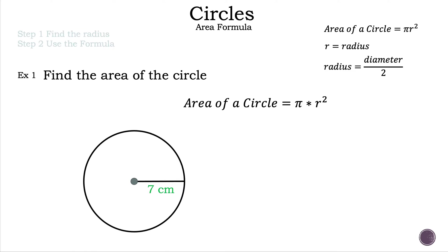As we can see on the screen, the formula is pi times r squared, where r is the radius. Looking at the circle, we're given the measurement seven centimeters, which represents the radius because the line above it starts at the center and goes to the edge. We substitute that into the formula for the letter r, giving us pi times seven squared, with parentheses around the number. Our next step is to square that number: seven squared is 49.